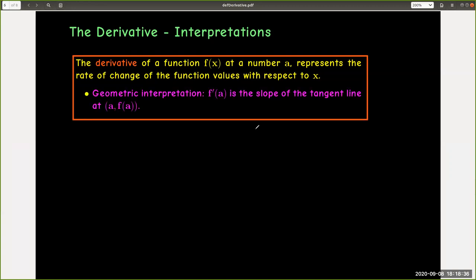The geometric interpretation: f'(a) is the slope of the tangent line to the graph of y = f(x) at the point (a, f(a)).